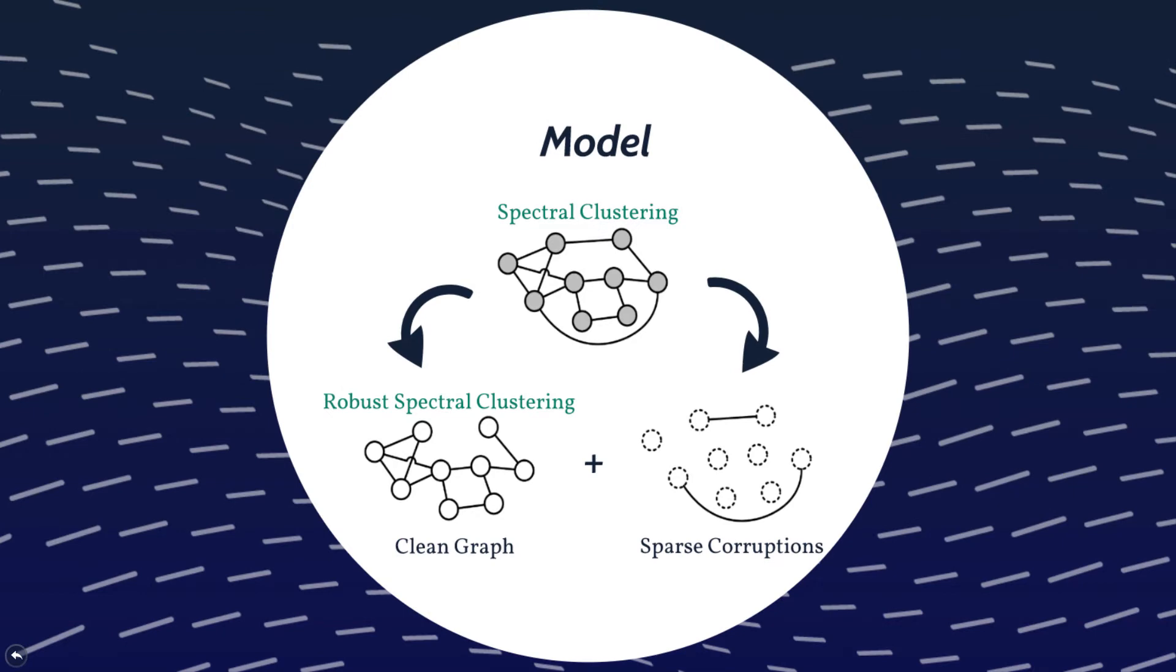In summary, the spectral clustering now performed on the clean graph and the decomposition are learned jointly, thereby revealing the clustering structure that was obfuscated by the corruptions.